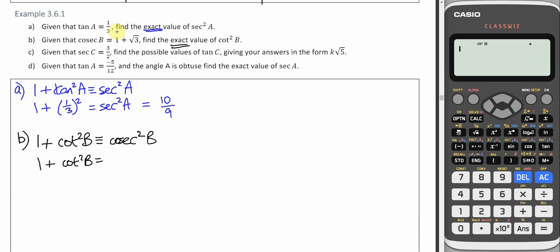Well, we know cosec B is 1 plus root 3. That's going to need squaring.